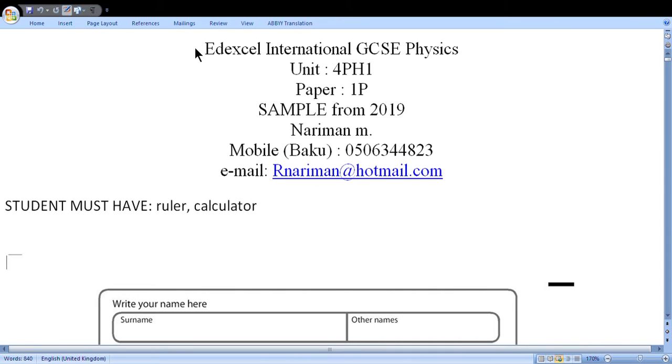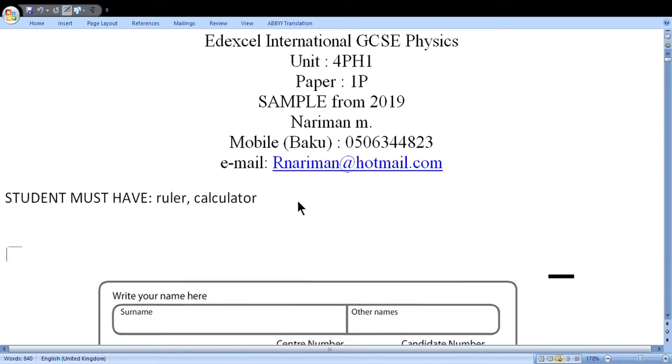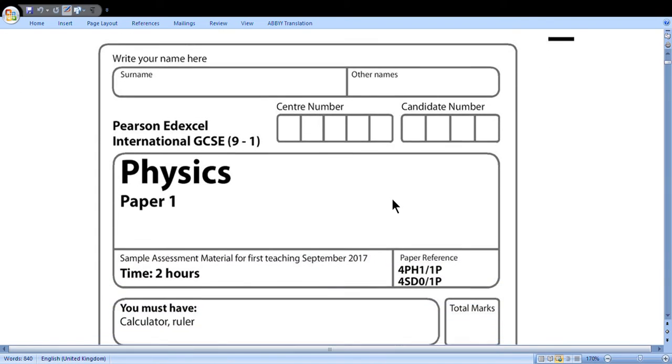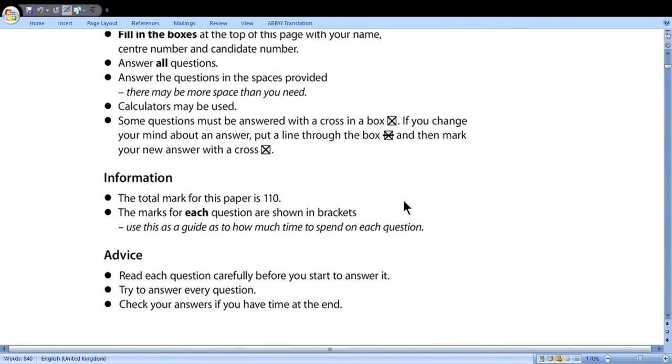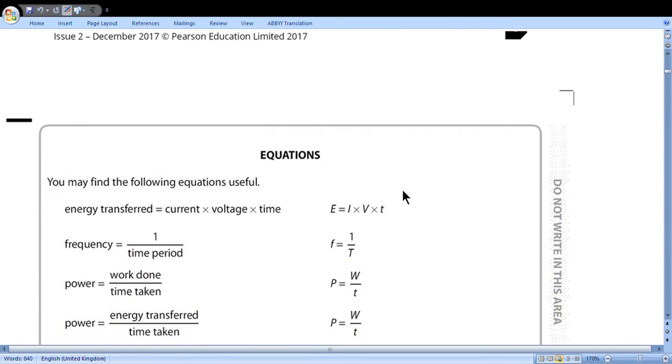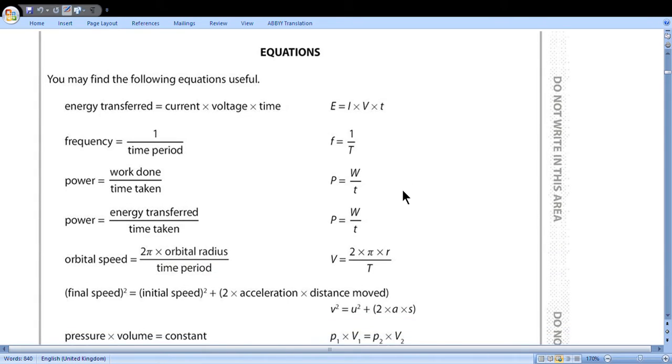Hello students. Today we'll discuss Edexcel International GCSE Physics Unit 4PH1 Paper 1P, a sample from year 2019. My name is Nariman Melim, I'm located in Baku and here you can see my mobile and email. For this paper students should have a ruler and calculator. This is the cover page. These are equations that will be given at the exams. Before the exam you will know which equations you should learn and which equations will be given.